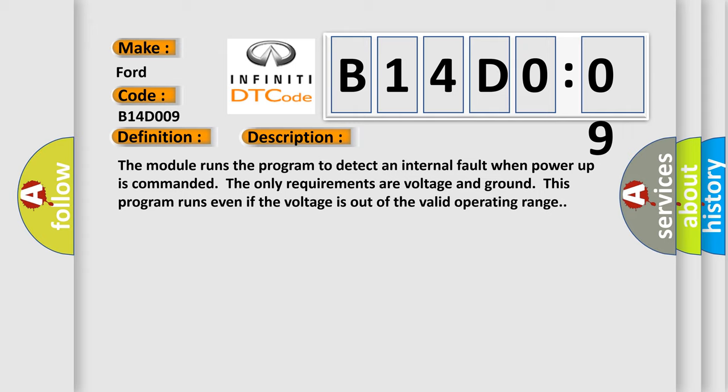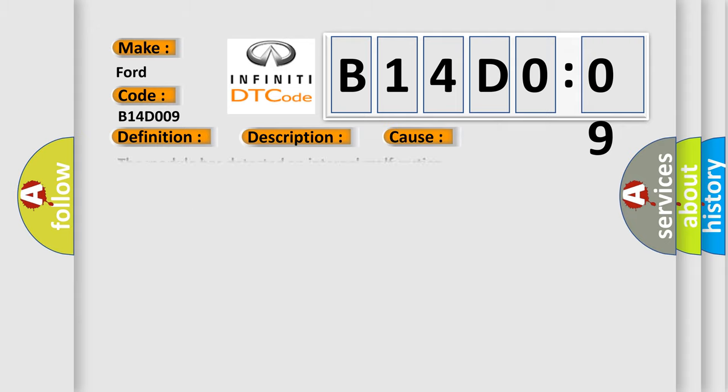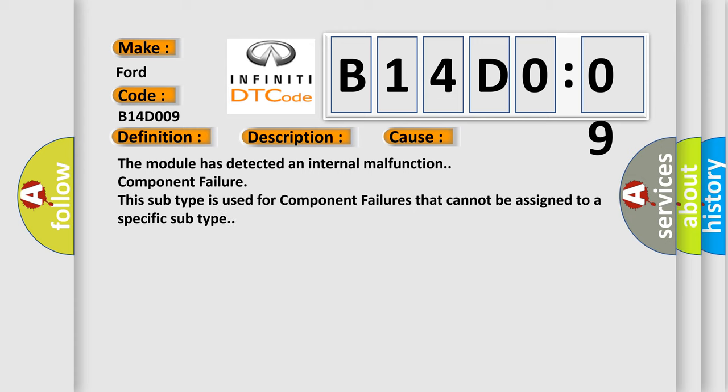The module runs the program to detect an internal fault when power-up is commanded. The only requirements are voltage and ground. This program runs even if the voltage is out of the valid operating range. This diagnostic error occurs most often in these cases: the module has detected an internal malfunction or component failure. This subtype is used for component failures that cannot be assigned to a specific subtype.